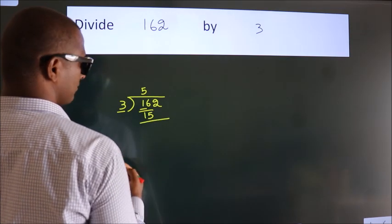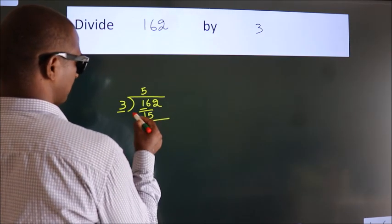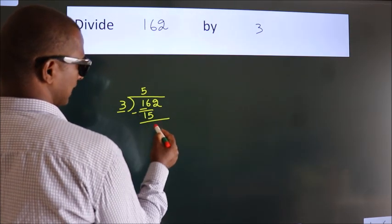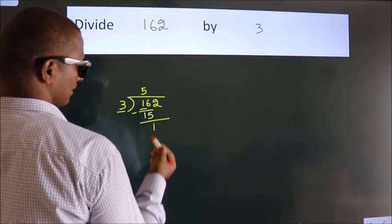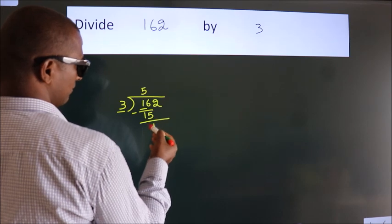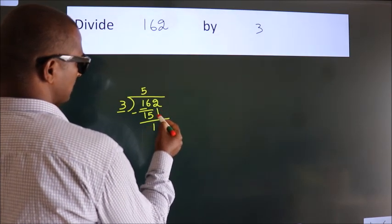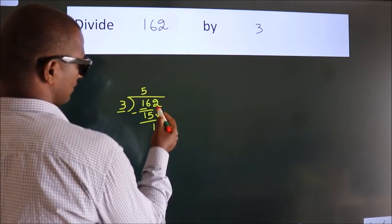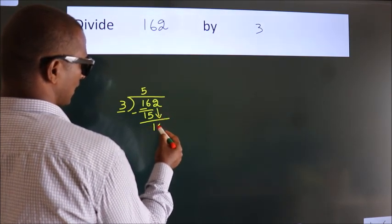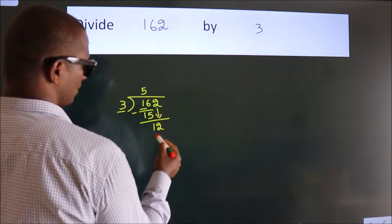Now we should subtract. We get 1. After this, bring down the beside number. So 2 comes down, making 12.